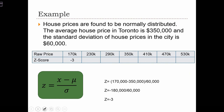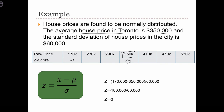Let's go back to our example: house prices are found to be normally distributed, and the average house price in Toronto is $350,000 with a standard deviation of $60,000. For a raw score of $350,000, the Z-score would be zero, because this raw score equals the average of the distribution — X minus mu is 350,000 minus 350,000 — giving a Z-score of zero.